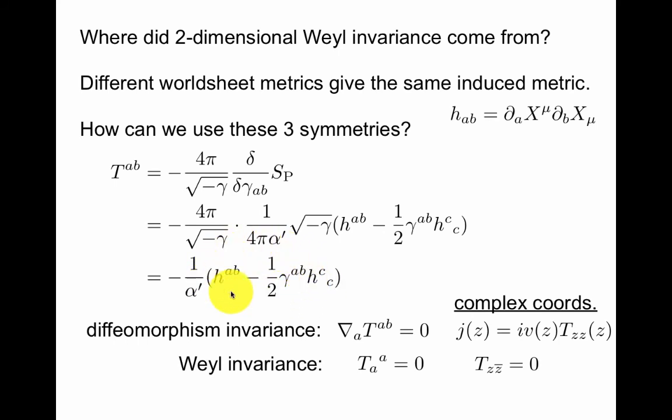Which is easy to see here. If you trace this here, you see that it vanishes classically, which in complex coordinates means that the off diagonal component z-zbar is zero.